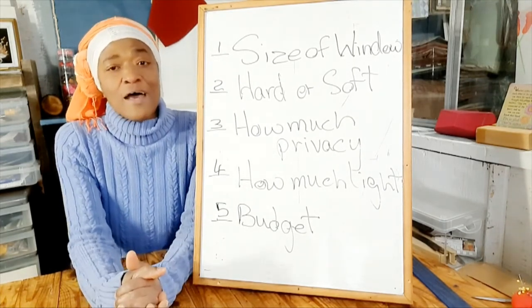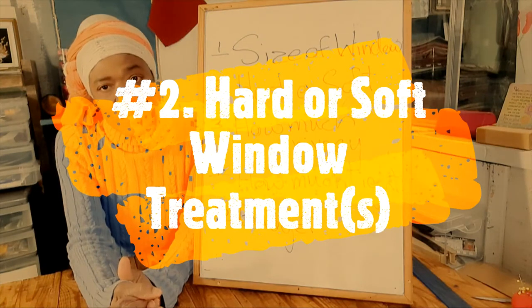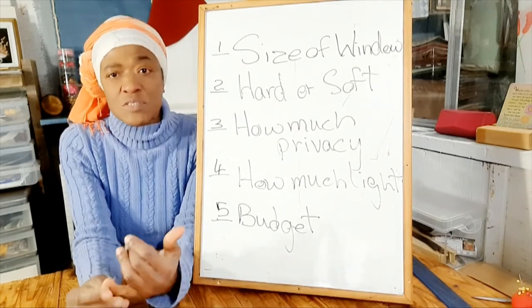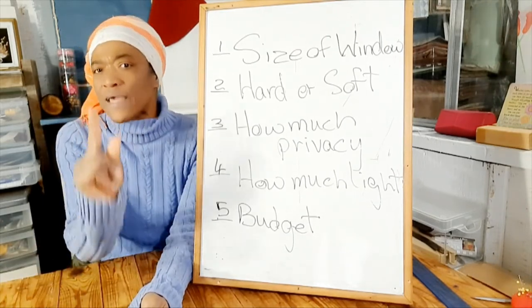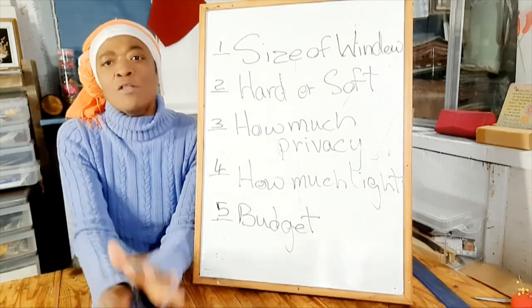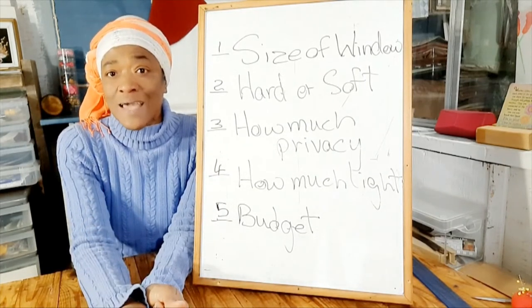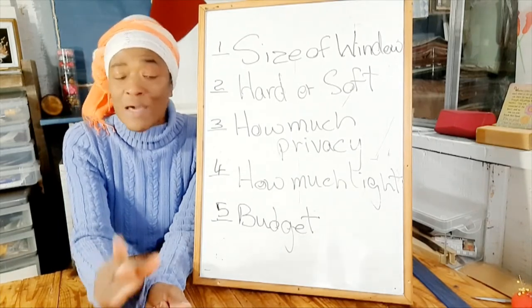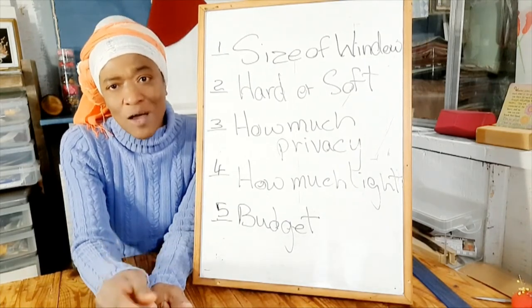The next thing you need to consider is whether or not you want soft or hard window treatments. You can watch the video I uploaded about hard and soft window treatments, but basically your soft window treatments are made from fabric. Your hard window treatments are made from everything else — bamboo, any type of wood, vinyl, metal. Those are your hard window treatments. One truth you need to know about hard window treatments is that they do not absorb noise or help to dampen the sound in a room, but your soft window treatments will.